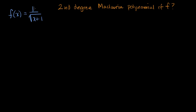We're told that f of x is equal to one over the square root of x plus one. What we want to figure out is what is the second degree Maclaurin polynomial of f? Pause this video and see if you could have a go at it.